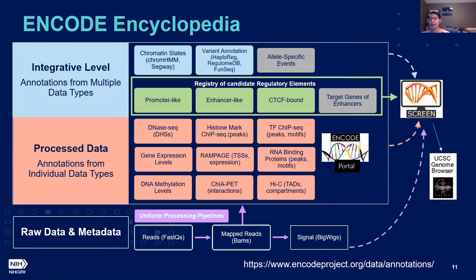For ENCODE, all of this is being brought together in the encyclopedia, which includes raw and processed data from all of the different assays and elements being called from the integrated data. These raw data are processed through uniform processing pipelines, and called elements make up this registry of candidate regulatory elements.